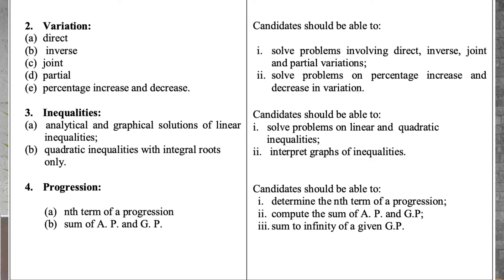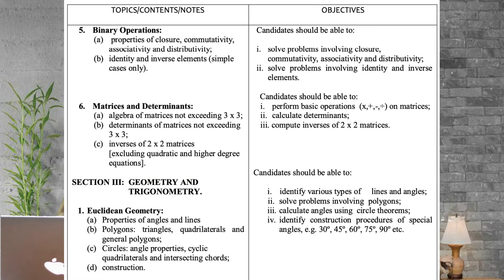Still under algebra, you need to know inequalities, then arithmetic progression (AP) and geometric progression (GP) — their nth term, their sum, and sum to infinity of GP. Also binary operations, then matrices and determinants: compute inverses of 2×2 matrices only — you don't need the inverse of a 3×3 matrix — and calculate determinants of matrices not exceeding 3×3, including addition, subtraction, and multiplication of matrices.